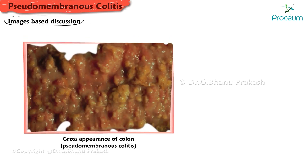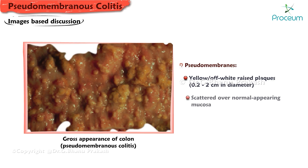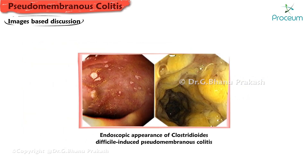In this image-based discussion, here is the gross appearance of the colon from a patient with pseudomembranous colitis. The pseudomembranes are yellow or off-white raised plaques, 0.2 to 2 centimeters in diameter, scattered over fairly normal-appearing intervening mucosa.